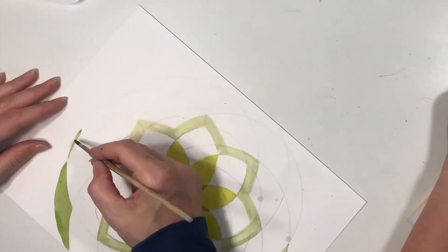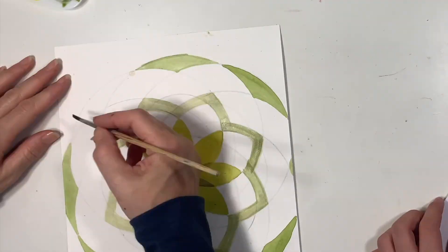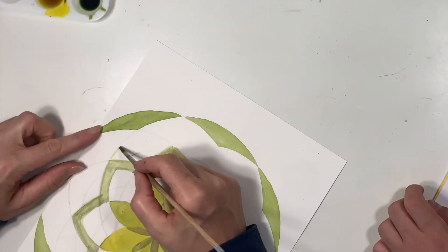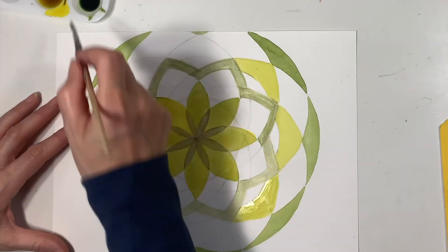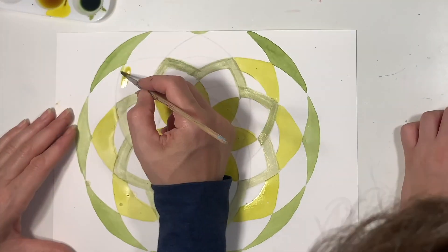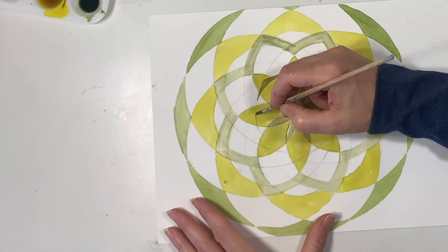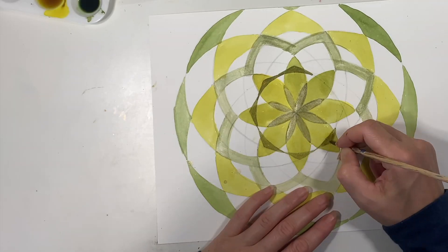And then I just kind of worked my way to the outside of the page, and I know that part of this design goes off the page, and that may be a little bit frustrating, but you can always reduce the original radius so that it doesn't go off the page or use a larger piece of paper.